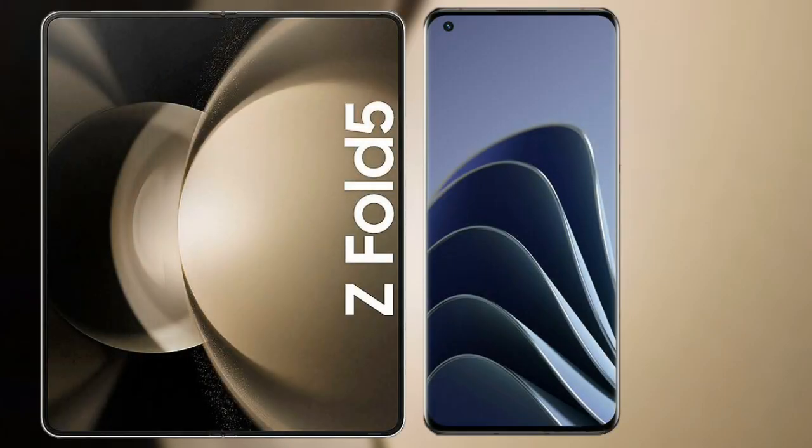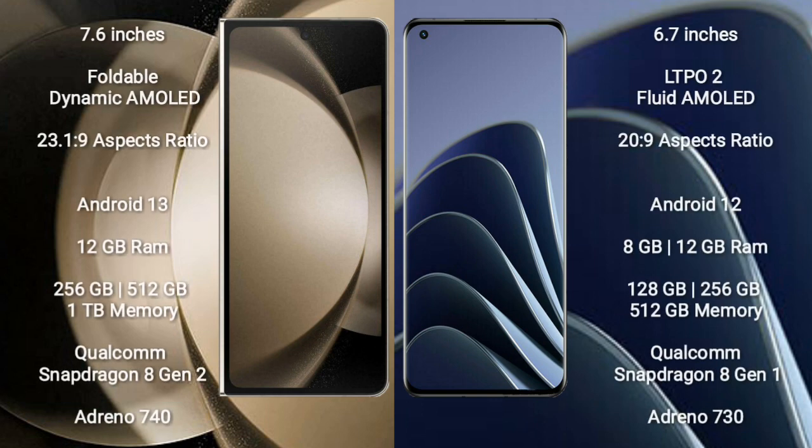I will compare the new Samsung Galaxy Z Fold 5 with the OnePlus 10 Pro. The Samsung Galaxy Z Fold 5 comes with a 7.6-inch foldable Dynamic AMOLED display at a 23:9 aspect ratio. The OnePlus 10 Pro comes with a 6.7-inch LTPO 2 flat AMOLED display at a 229 resolution.